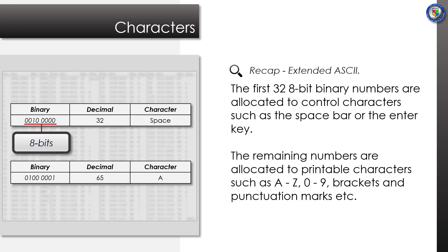As we have learned before, the first 32 8-bit binary numbers are allocated to control characters, such as the spacebar or the enter key. The remaining numbers are allocated to printable characters, such as A–Z, 0–9, brackets, punctuation marks, etc.